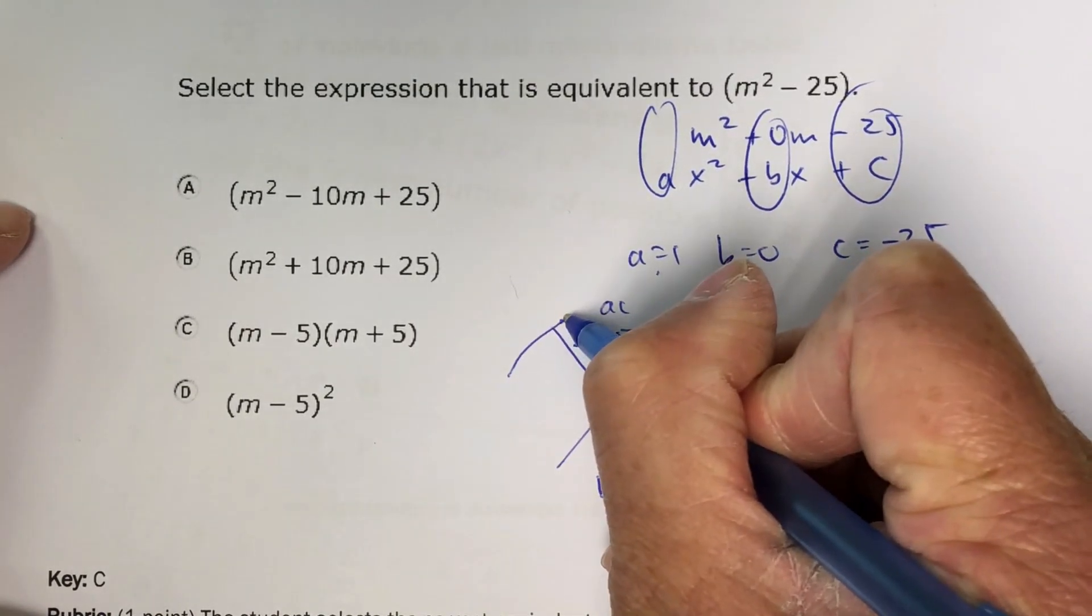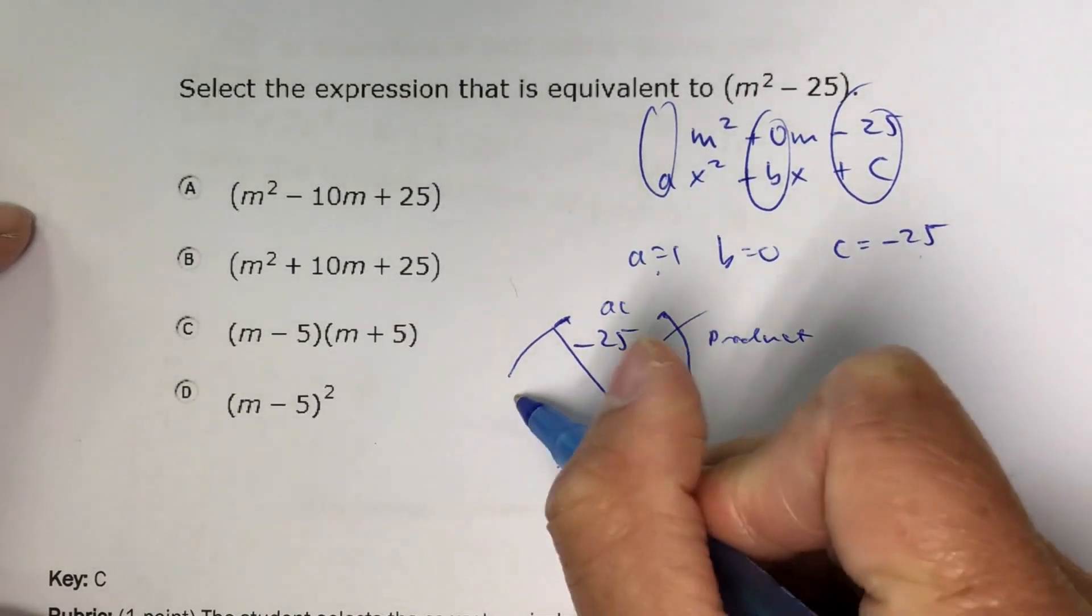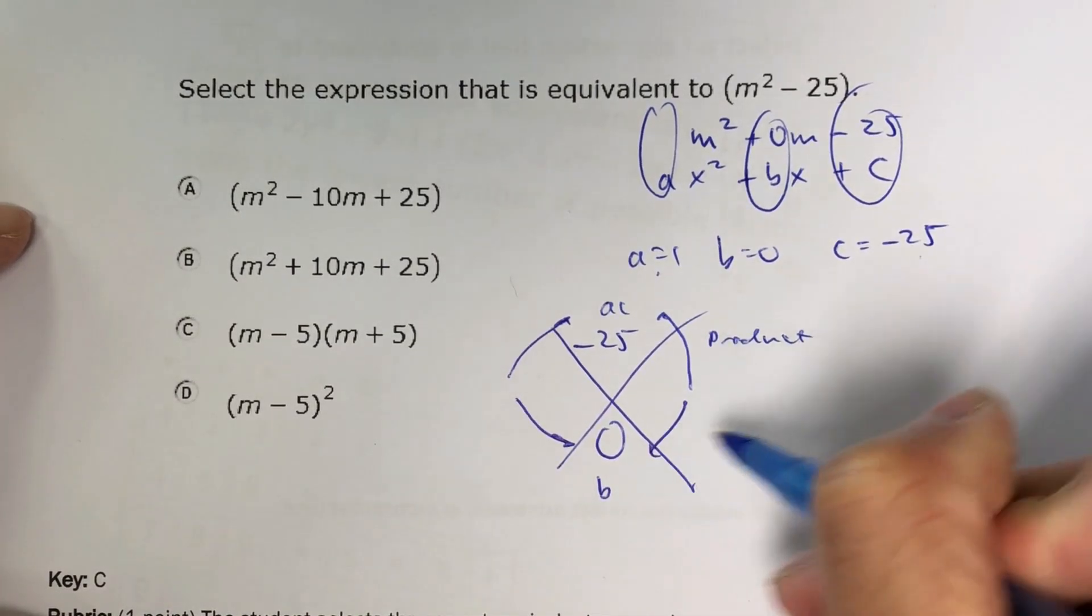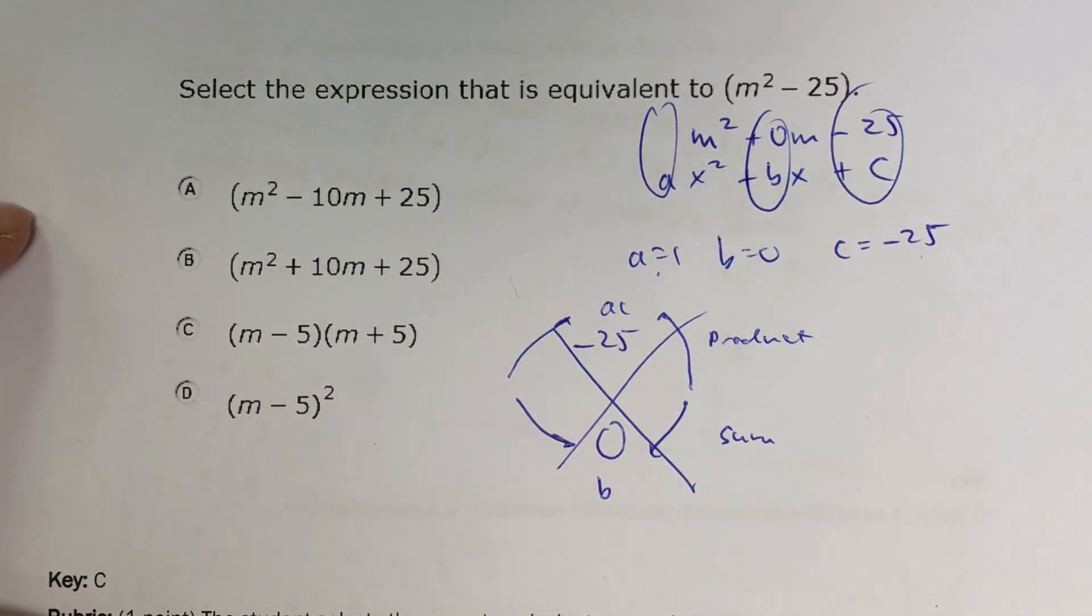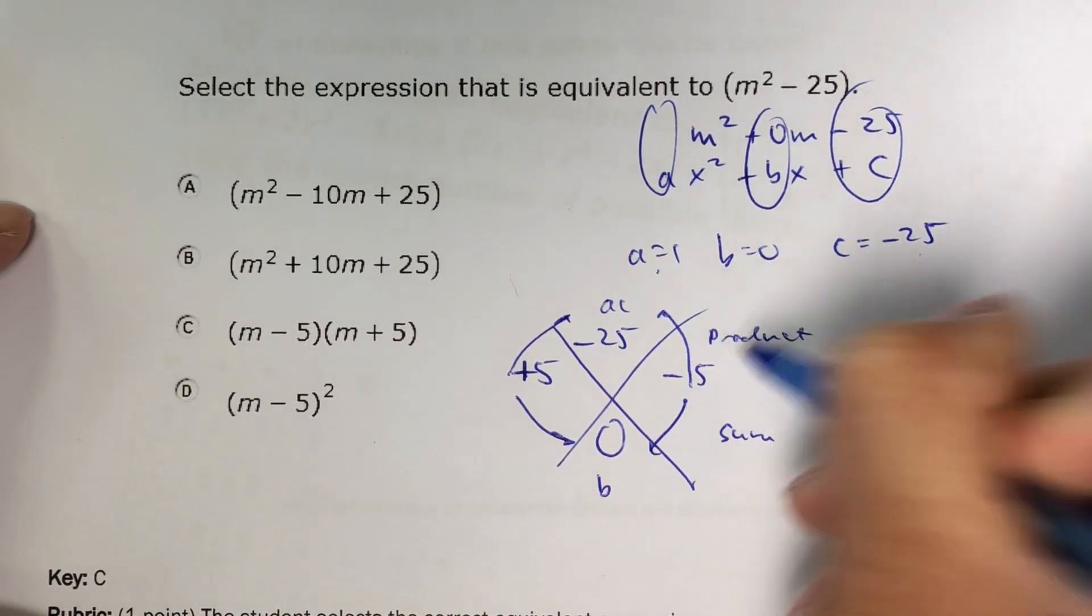I need two numbers that their product is negative 25. And those same two numbers, their sum is 0. So those two numbers are going to be 5 and negative 5.